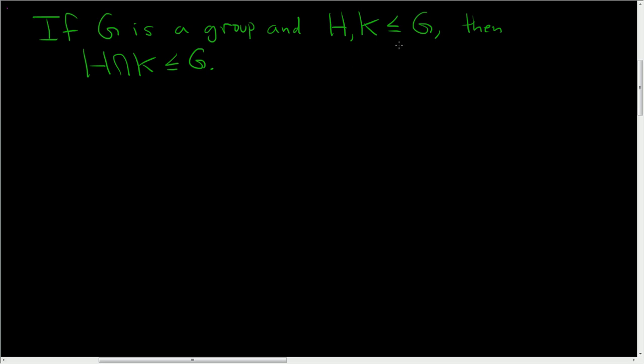If G is a group and H and K are subgroups of G, then H intersection K is also a subgroup. First, it's worth noting that this symbol means subgroup. A lot of people might have never seen that, so proof.